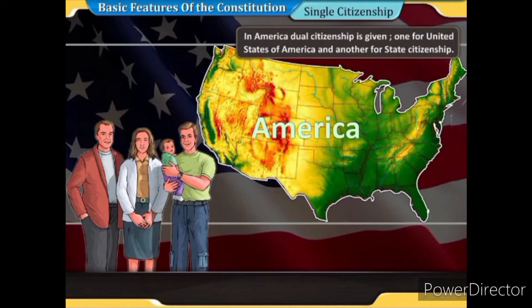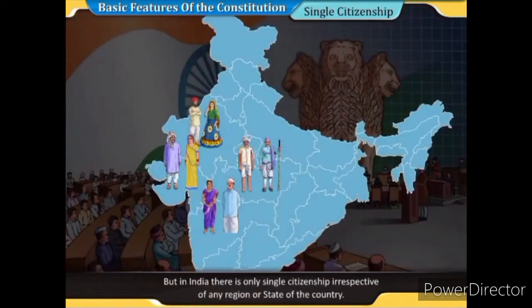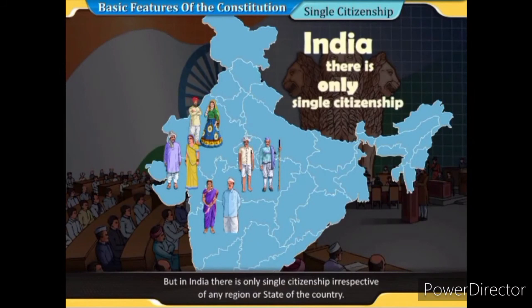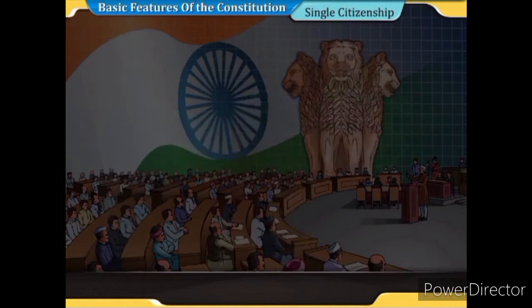Regarding citizenship: in America, dual citizenship is given — one for the United States of America and another for state citizenship. But in India there is only single citizenship, irrespective of any region or state of the country. Only citizens of Jammu and Kashmir have dual citizenship — one for India and another for the state of Jammu and Kashmir.